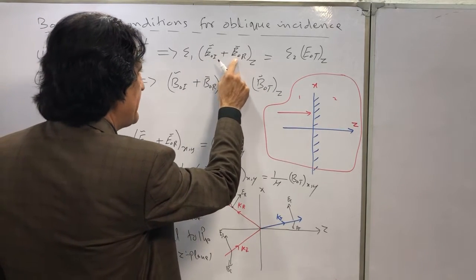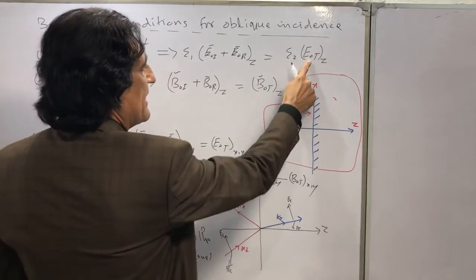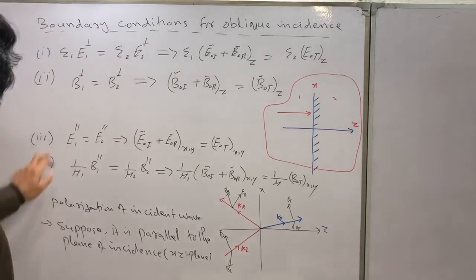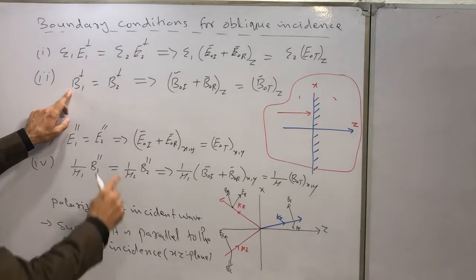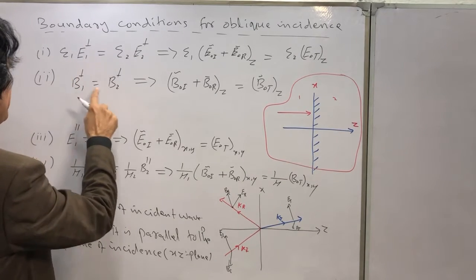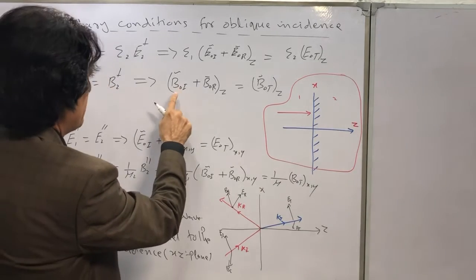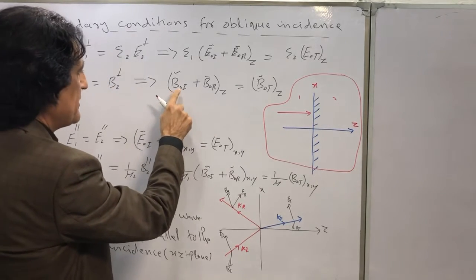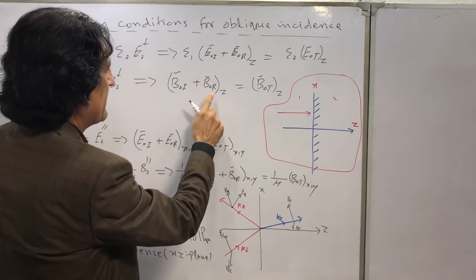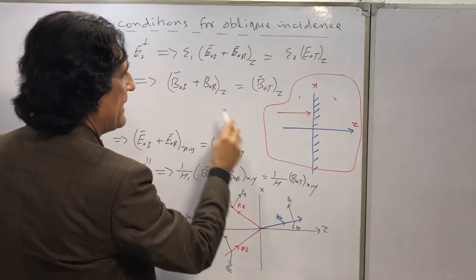Similarly for the magnetic field, the boundary condition is B₁⊥ = B₂⊥, which gives us B₀ᵢ plus B₀ᵣ (the reflected component) equal to B₀ₜ (the transmitted component).